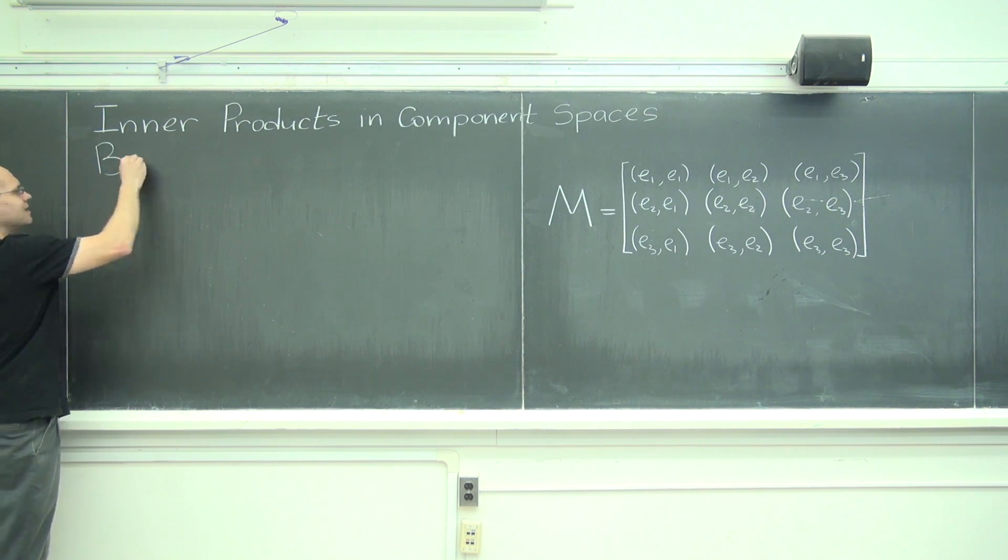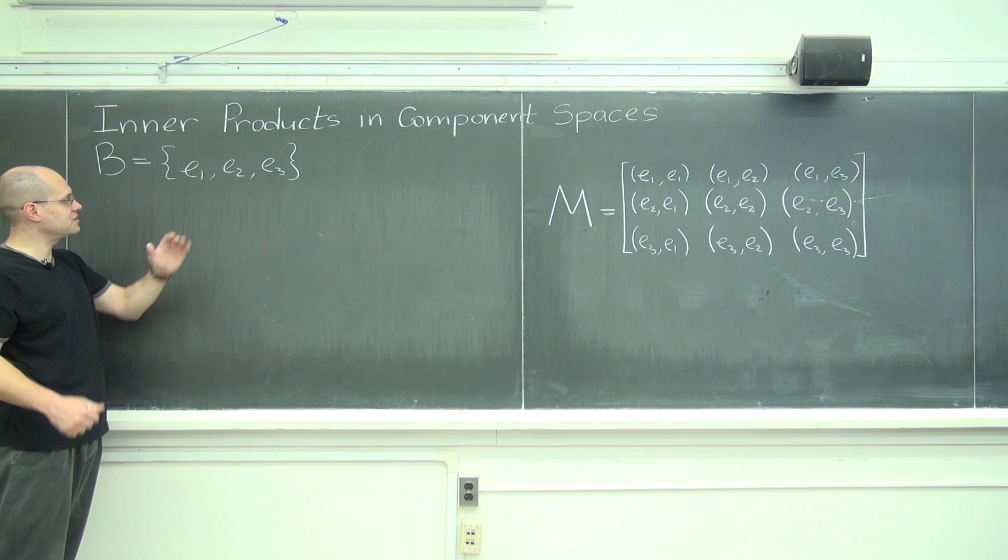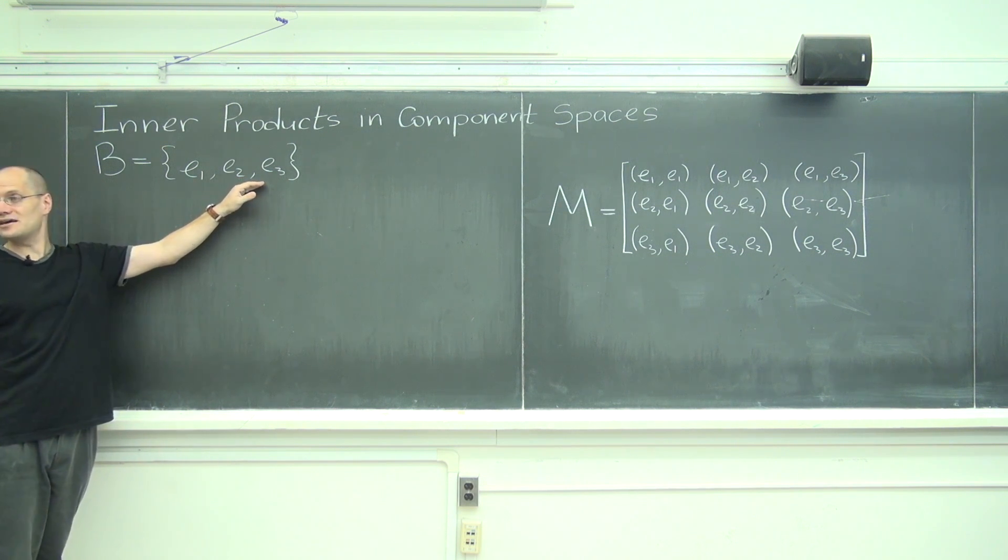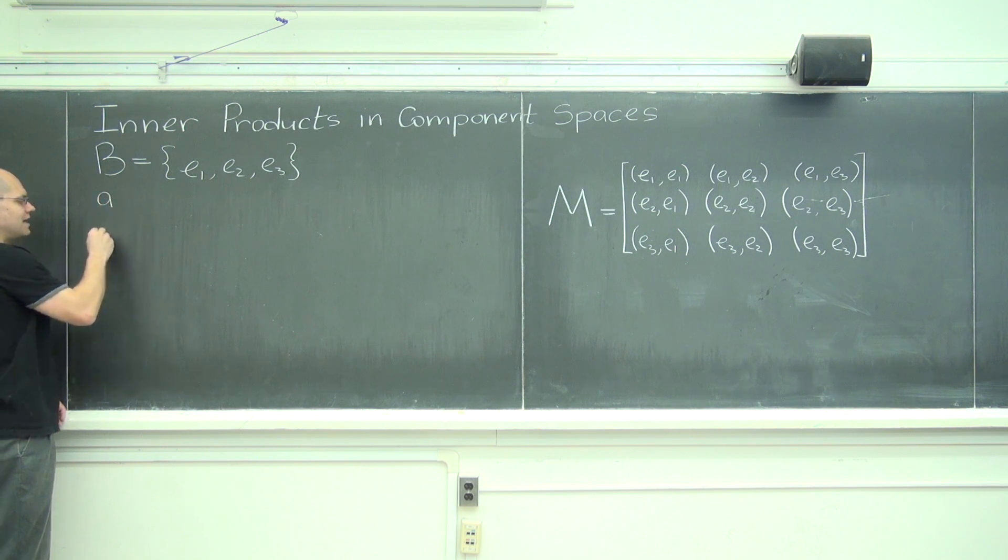The first thing is inner products in component spaces. Suppose we have a basis B, and let's suppose we have an inner product, with respect to which these are not even necessarily orthogonal or anything like that, an arbitrary basis. And we have two vectors, A and B.